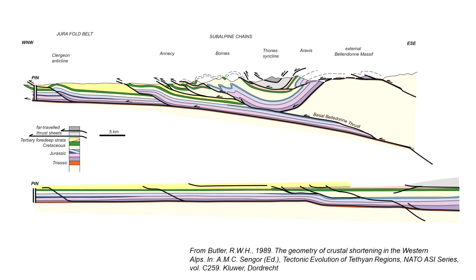This is a cross-section through the outer part of the French Alps constructed quite a number of years ago. It shows a number of key structural elements, including a series of thrust structures involving the Mesozoic sedimentary cover, chiefly of Jurassic and Cretaceous age, climbing up from a thrust on the right-hand side that carries crystalline basement rocks. The cross-section is oriented west-northwest to east-southeast, with the west-northwest side towards the foreland and the main Alps to the right.